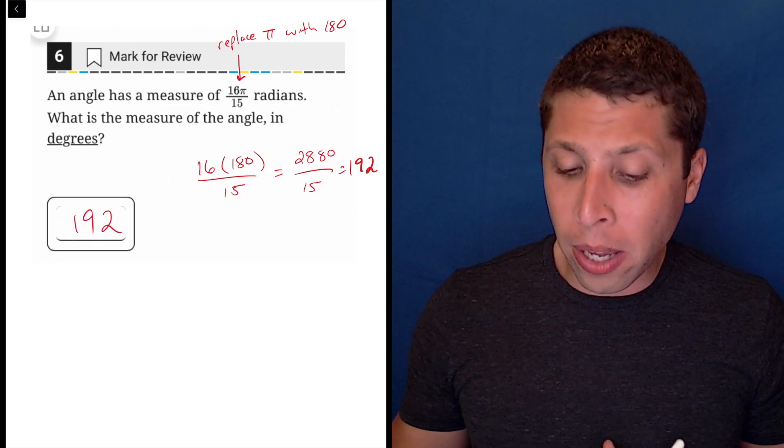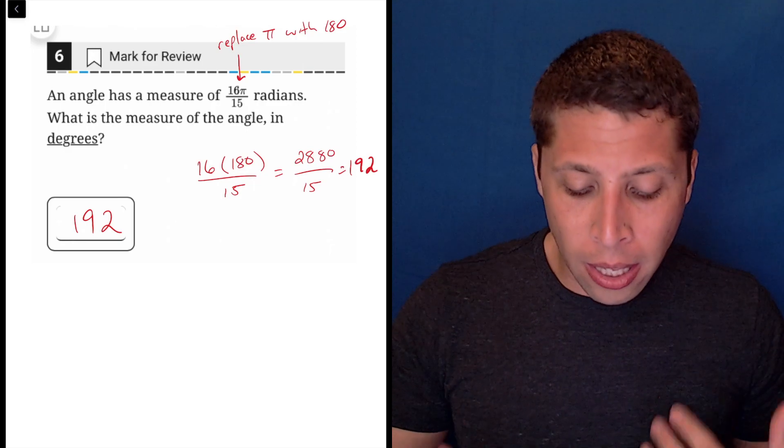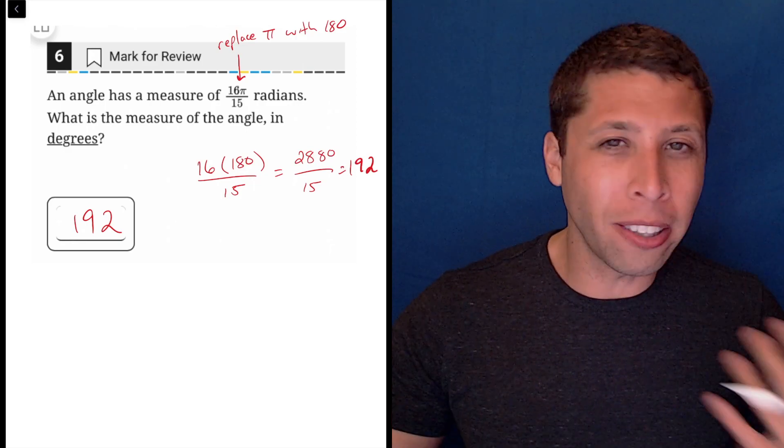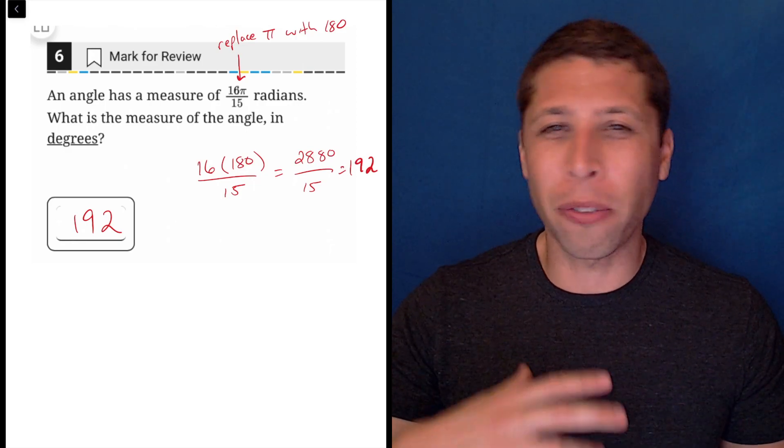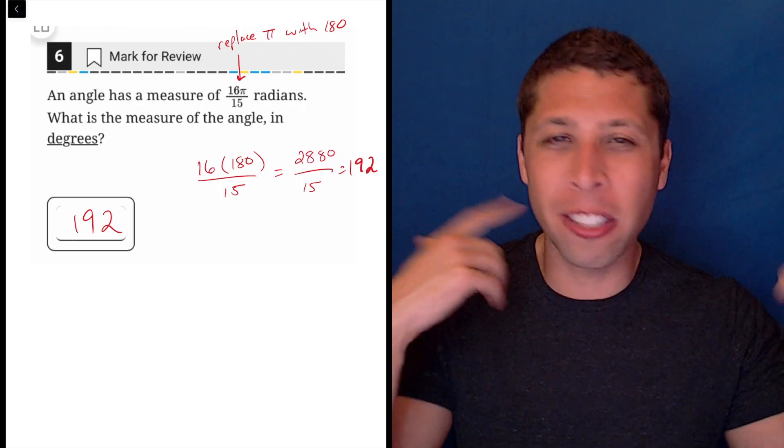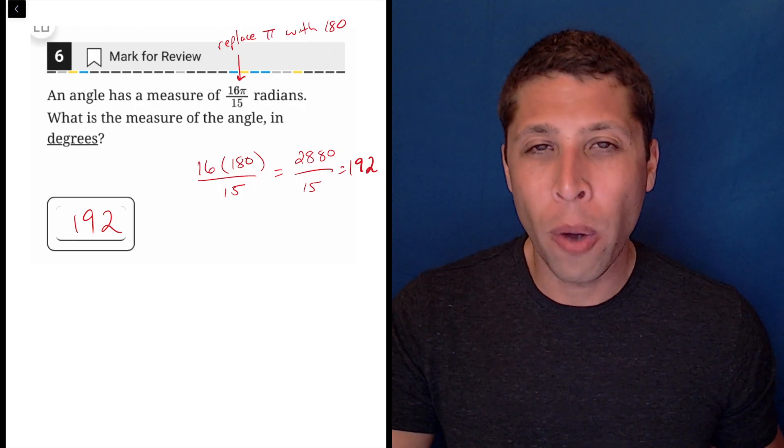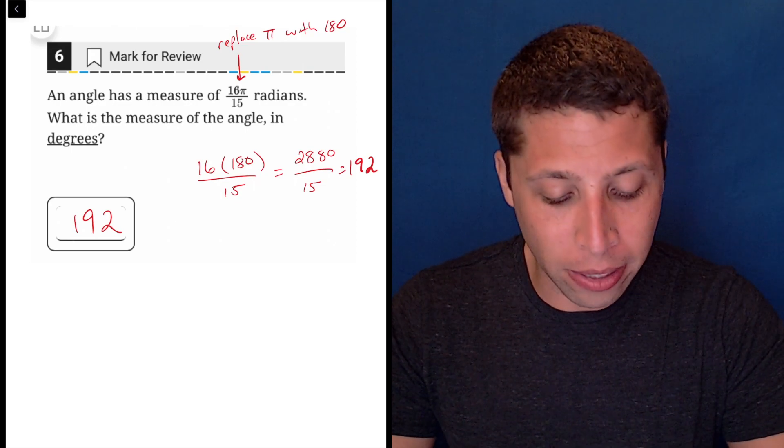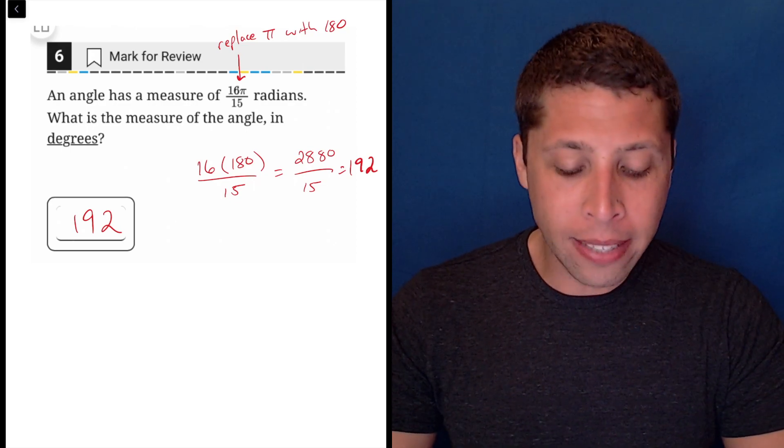So that's probably the fastest way to do it, but I don't know. For me, sometimes I just get a little nervous with these conversions, because sometimes there's a formula to go back to go from degrees into radians, and my brain kind of gets them confused. So the way that I do it to be a little bit more certain is I use a ratio.